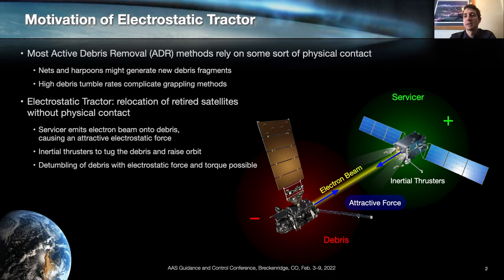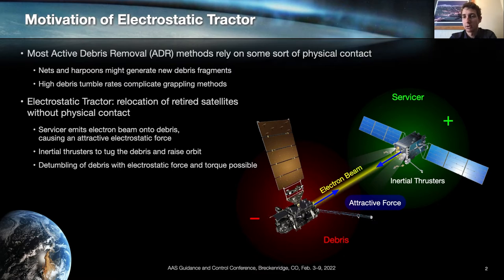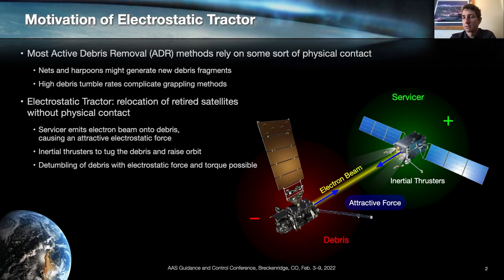On the other hand, retired satellites especially in GEO can tumble with high rotational rates over 10 degrees per second, and that will complicate any debris removal method that aims at docking with the debris or grabbing it with robotic arms or similar approaches. So the electrostatic tractor has been proposed to touchlessly remove debris from geostationary orbit and relocate it to a graveyard orbit 300 kilometers or more above GEO.